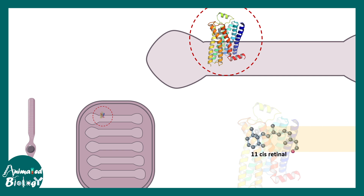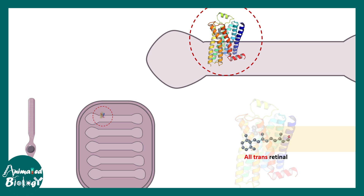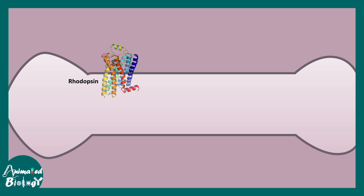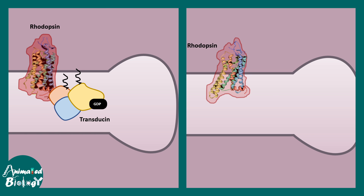Rhodopsin contains a specific molecule called 11-cis retinal, which upon light exposure gets converted into trans-retinal. This leads to a conformational change that activates a G protein known as transducin. Transducin gets activated when light impinges on the rod cell.